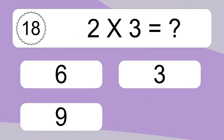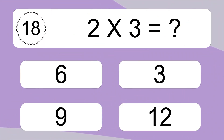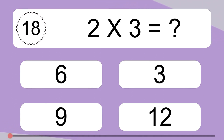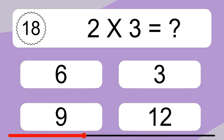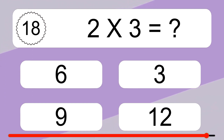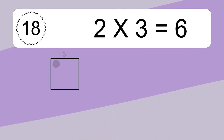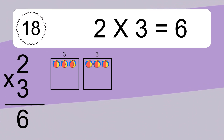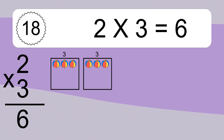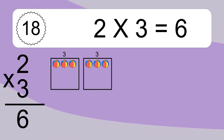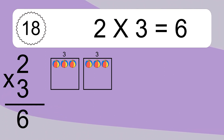2 times 3 equals what? 2 times 3 equals 6. We have 2 boxes, and each box has 3 colorful balls inside. If you count all the balls in all the boxes together, you will have 2 times 3 balls. This equals 6 balls.